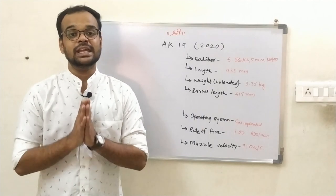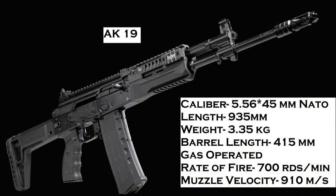The latest and last weapon of the AK family is the AK-19, which came into operation in 2020. It fires NATO 5.56×45mm ammunition, has an overall length of 935mm, weighs 3.35kg, and has a barrel length of 415mm. It is a gas-operated firearm capable of firing 700 rounds per minute with a muzzle velocity of 910 meters per second.